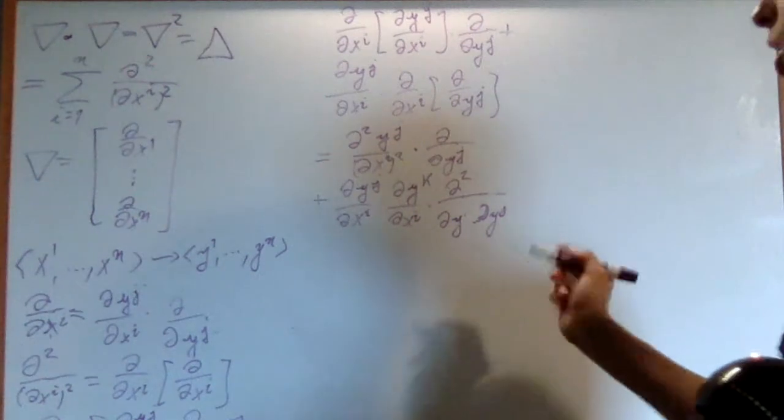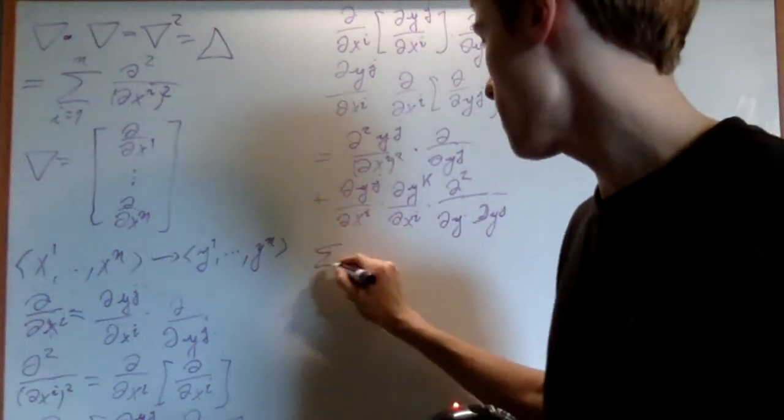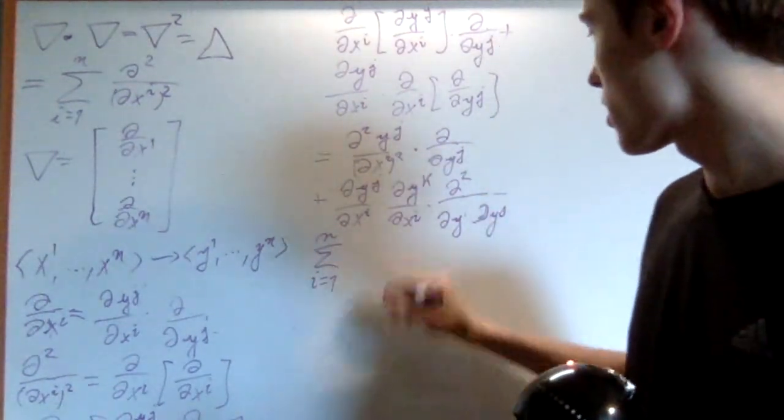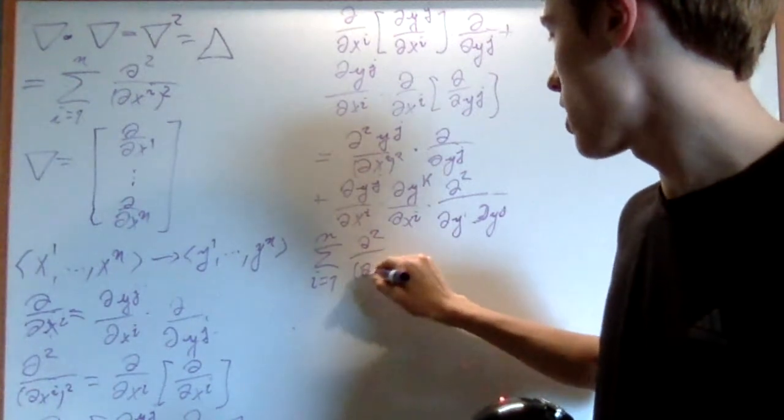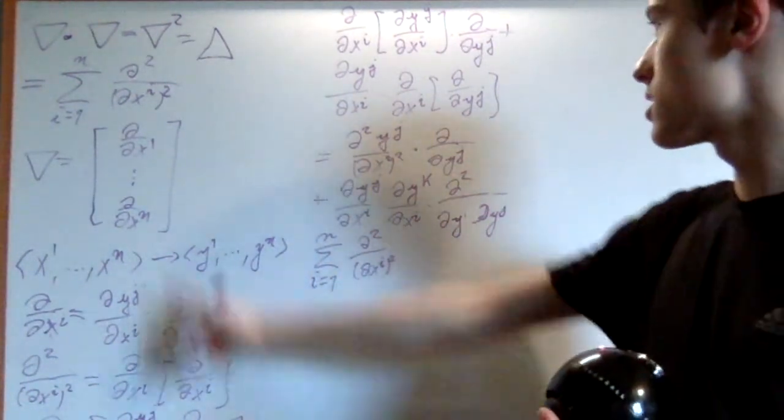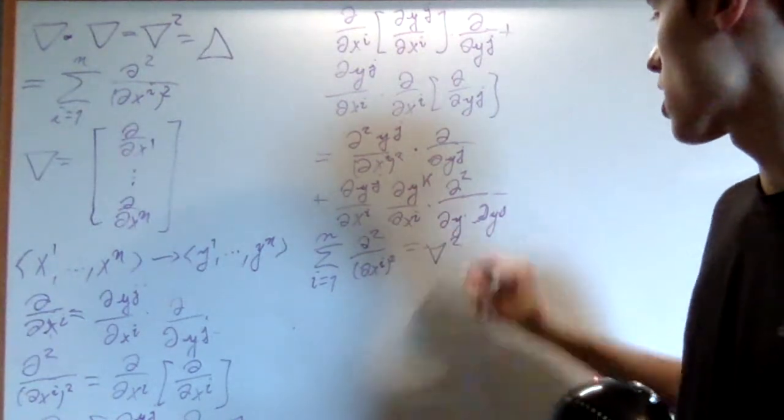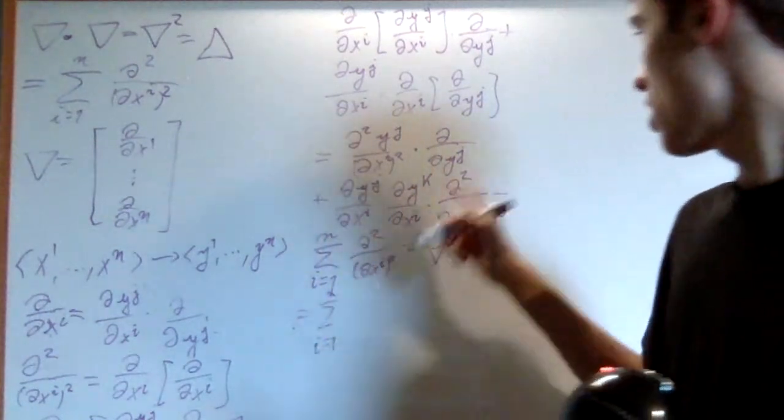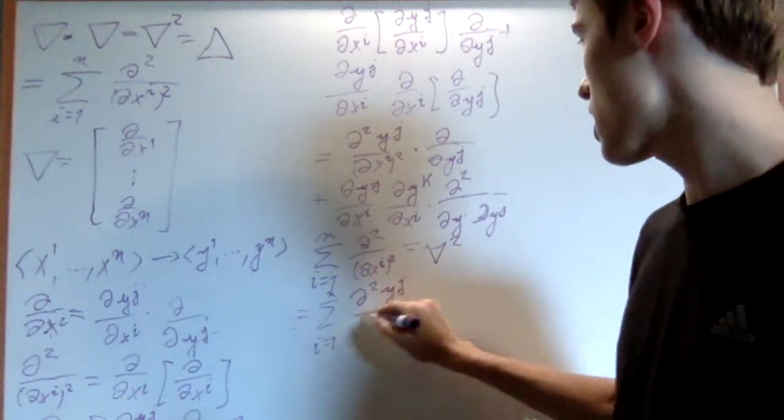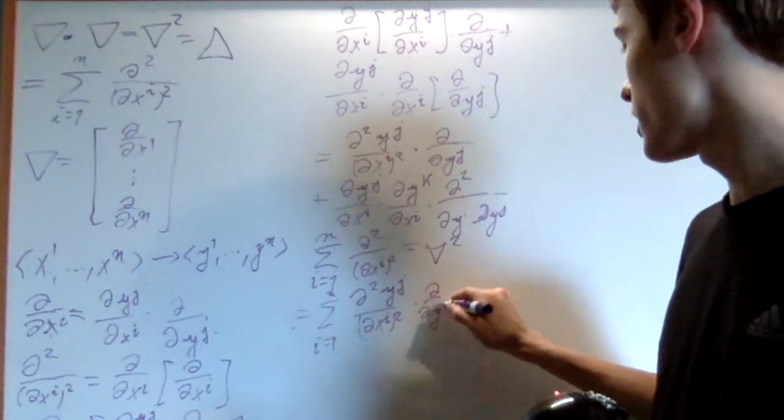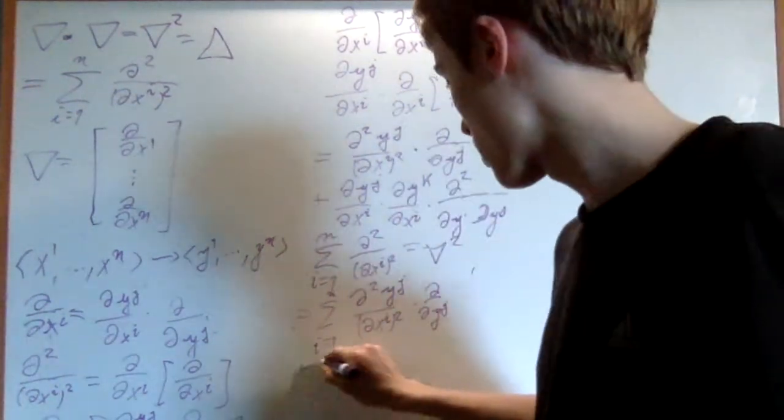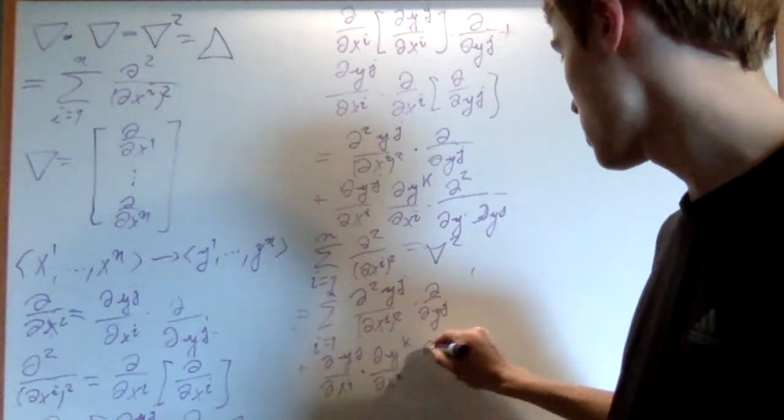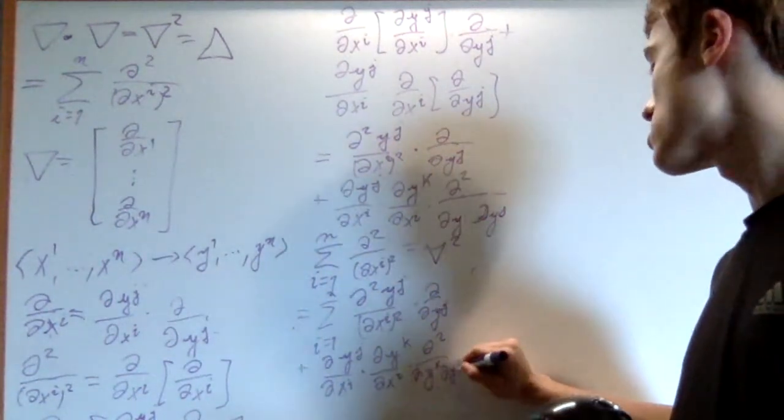So now let's sum over all of the i's. The sum from i equals 1 to n of del squared on del xi squared - this is precisely the Laplacian. Well, then this is equal to the sum from i equals 1 to n of all this: del squared yj on del xi squared times del on del yj, plus del yj on del xi times del yk on del xi times del squared on del yk del yj.